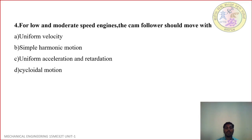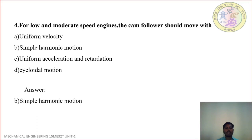Question 4: For low and moderate speed engines, the CAM follower should move with — A: Uniform velocity, B: Simple Harmonic Motion, C: Uniform Acceleration and Retardation, D: Cycloidal motion. Correct answer is B: Simple Harmonic Motion.